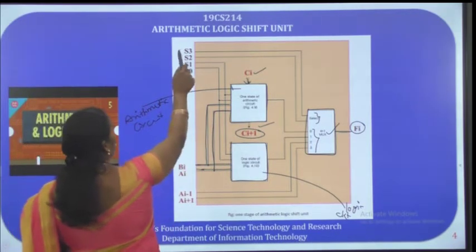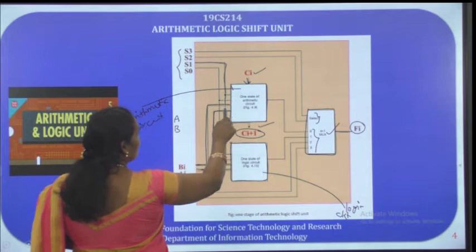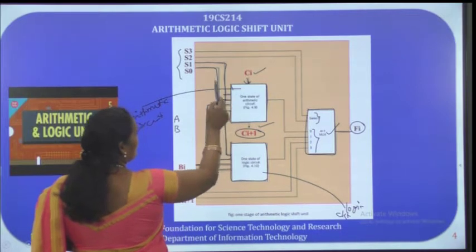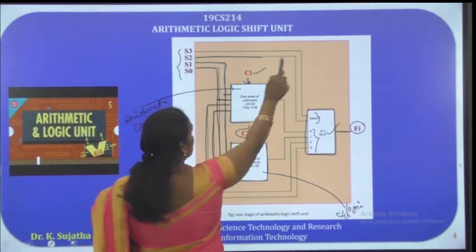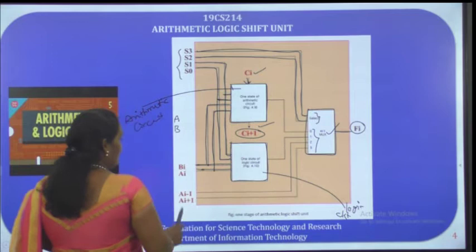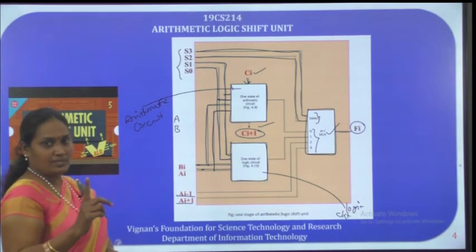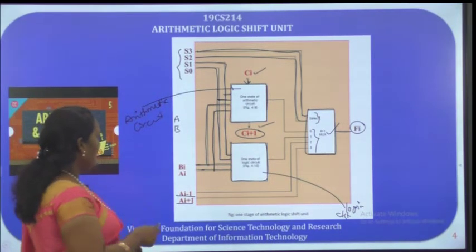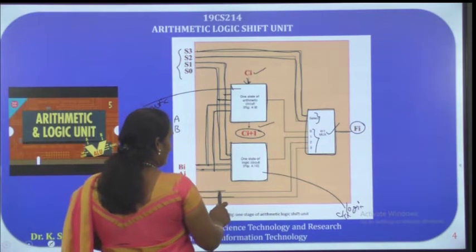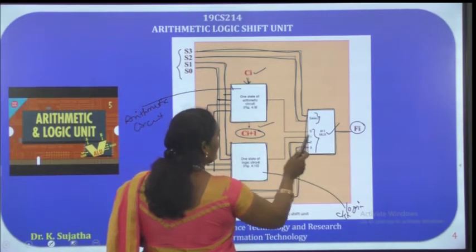There are 4 selection inputs: S0, S1, S2, and S3. S0 and S1 are connected to both the logic circuit and the arithmetic circuit. S2 and S3 are connected to the output multiplexer. For shift operations, only one operand is needed; Ai-1 is connected to input 2 of the multiplexer for right shift, and Ai+1 is connected to input 3 for left shift.